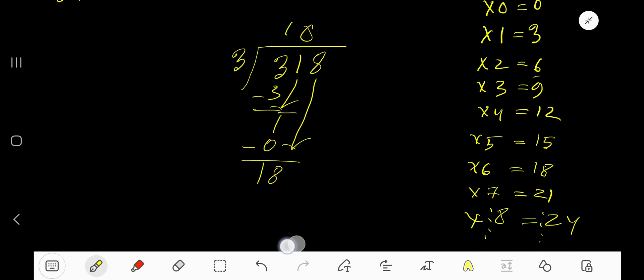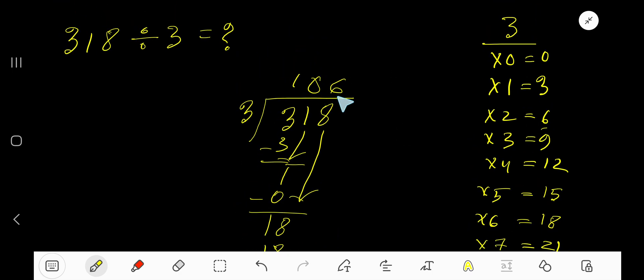18. 3 goes into 18 how many times? 6 times. 6 times 3 is 18, subtract to get 0. As our remainder is 0, we are done. Our answer is 106.